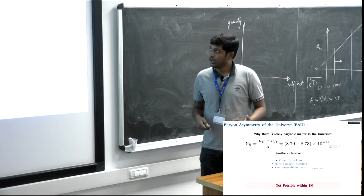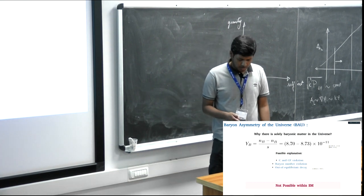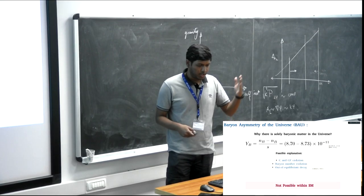There is another problem: our universe is baryon asymmetric, quantified by Y_B, the ratio of baryon number density to entropy density. From both CMB and BBN, we get very similar constraints on Y_B, telling us we live in a baryon asymmetric universe. The question is whether we can generate a baryon asymmetric universe from a baryon symmetric one.